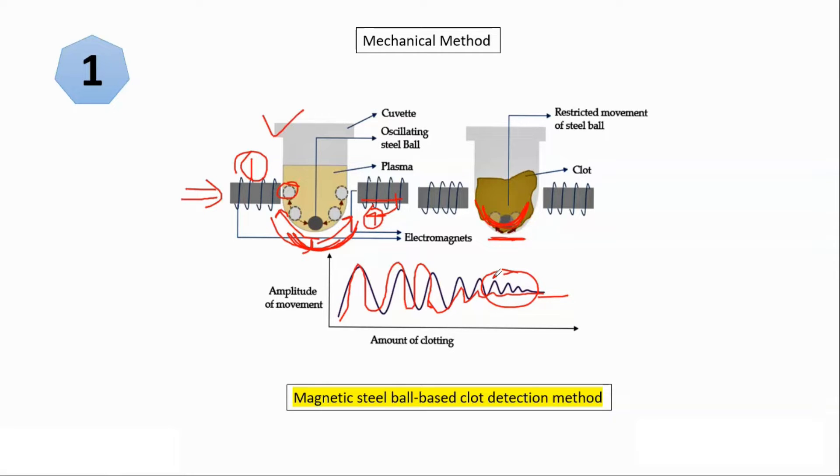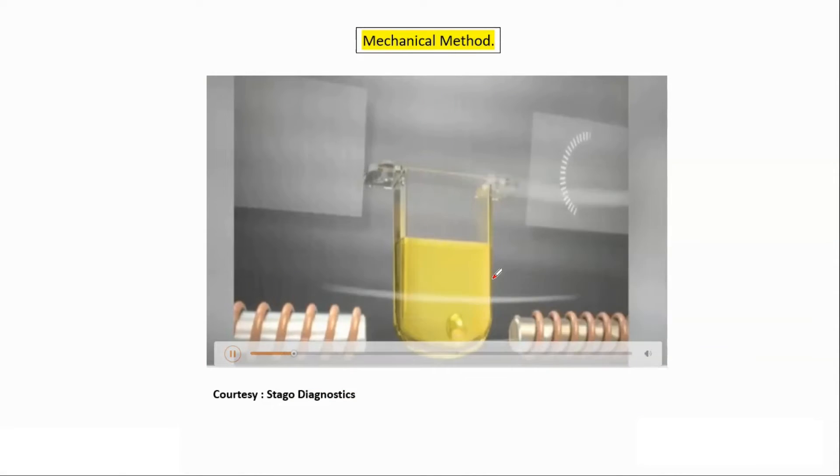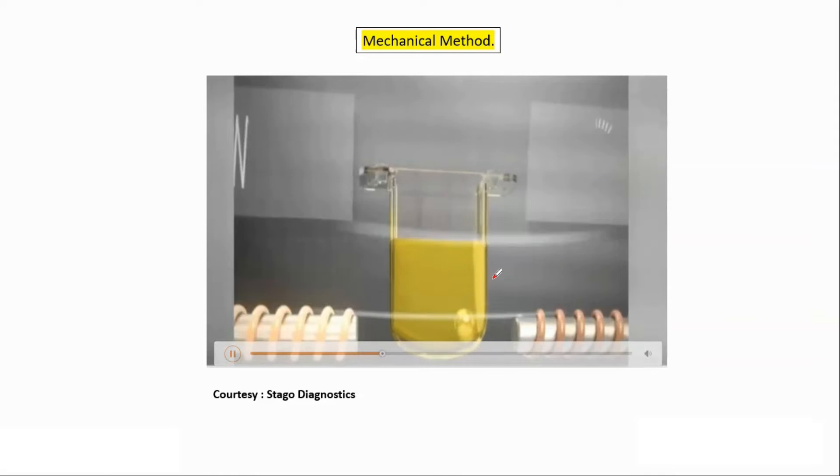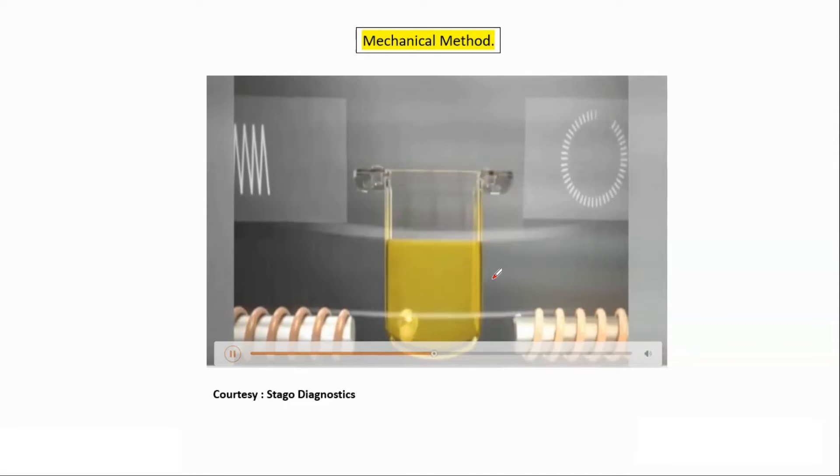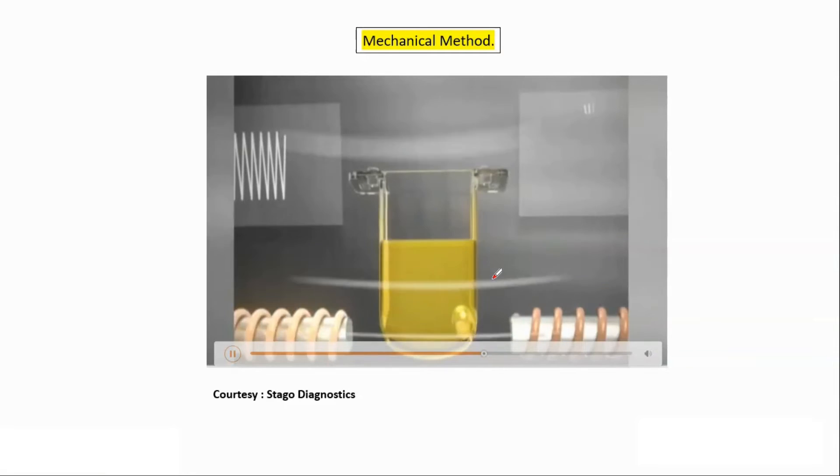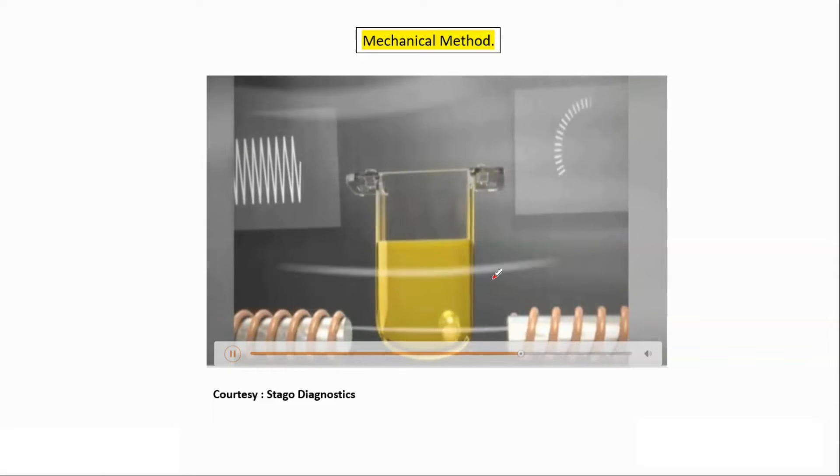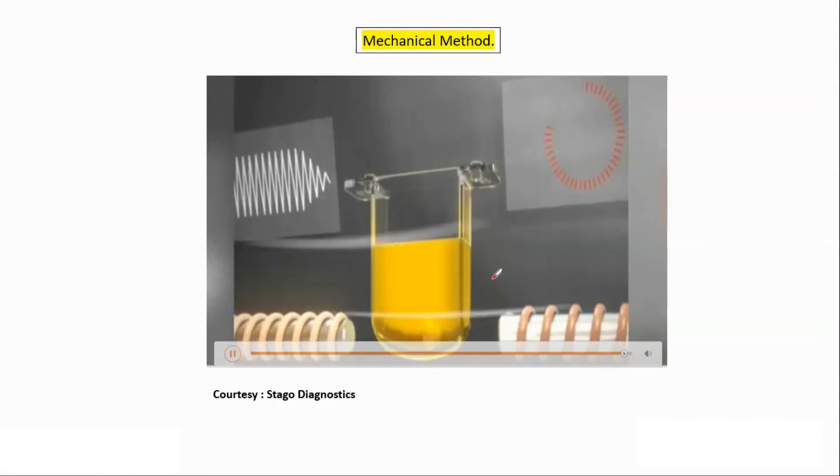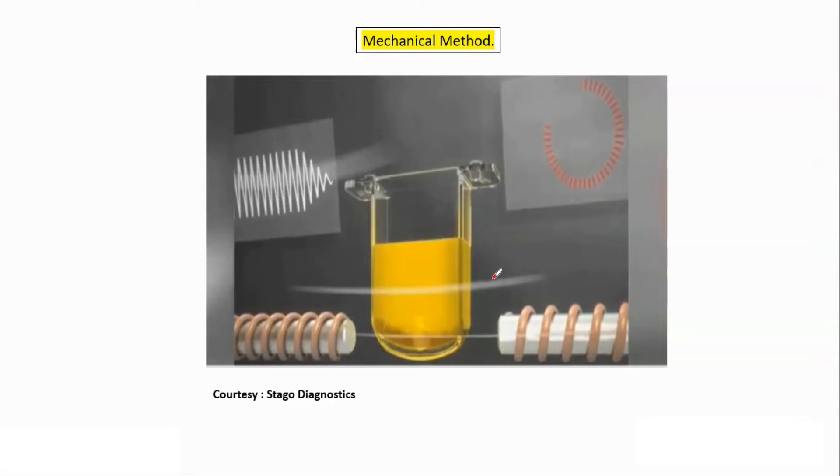So here for better understanding I will show you a video. You can see one time one magnet is activated, ball is moving on that side, and again alternately these magnets are activating, deactivating, and ball is moving as per situation. But as soon as clot gets formed, then chronometer stops. So as soon as clot got formed, then range of motion will be diminished or minimal and clot is detected by the sensors inside it and we will get the reading in seconds.